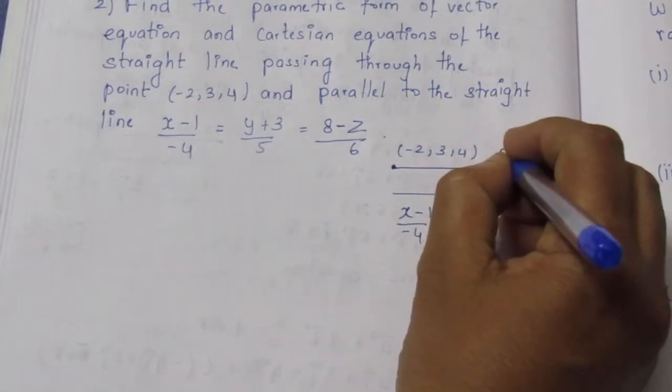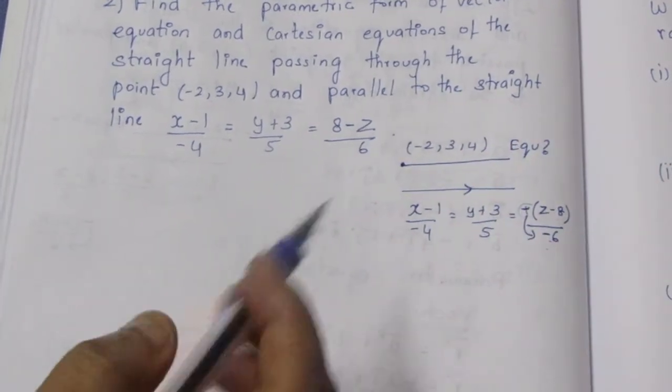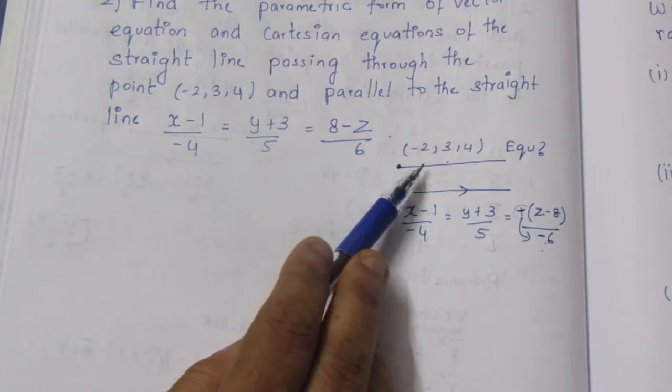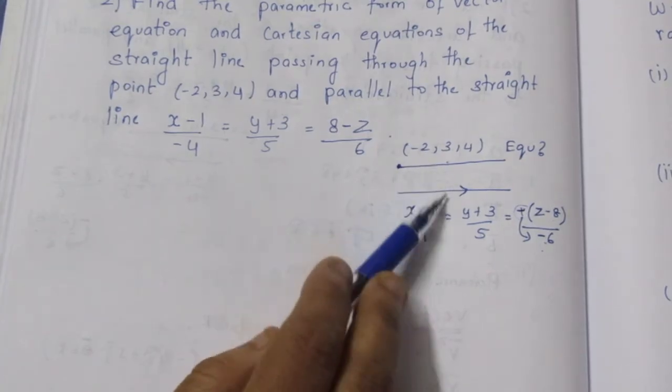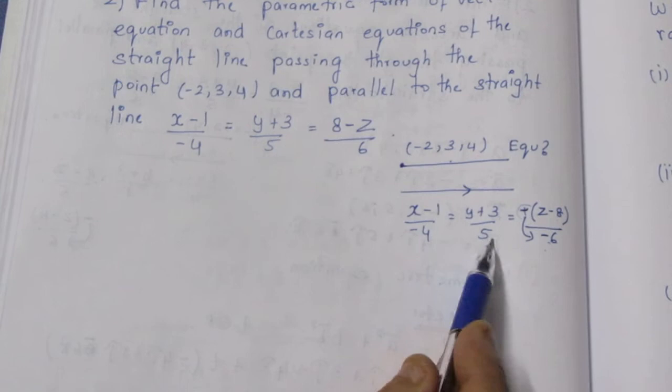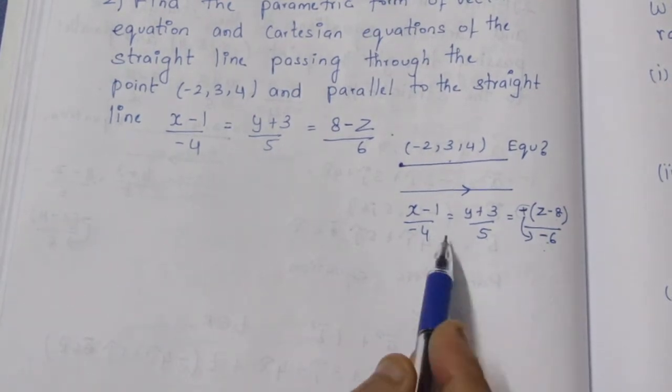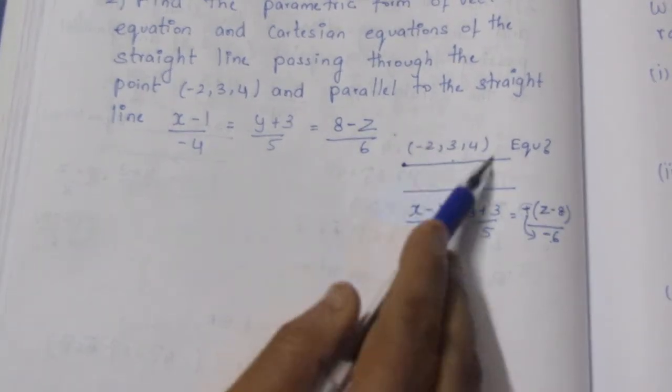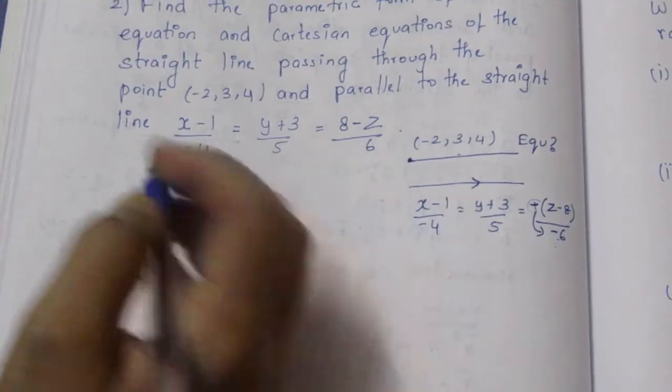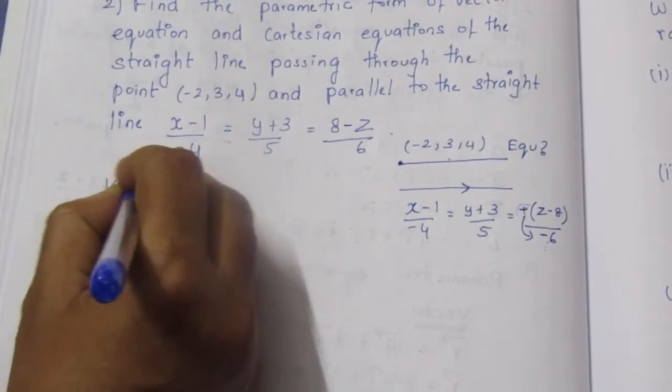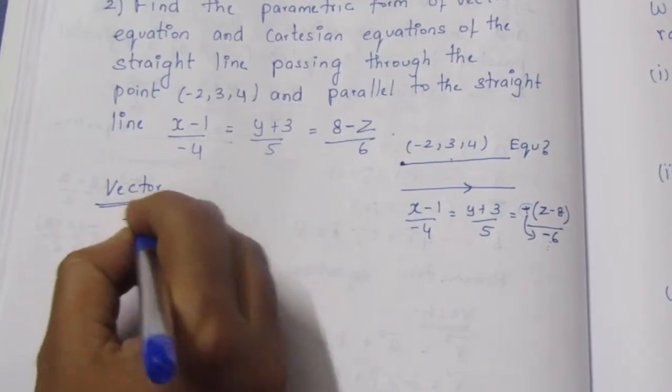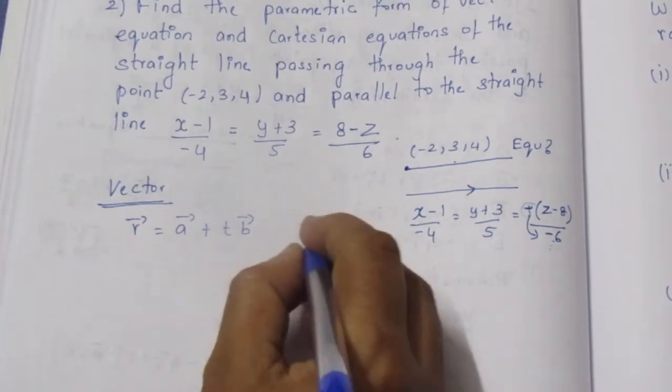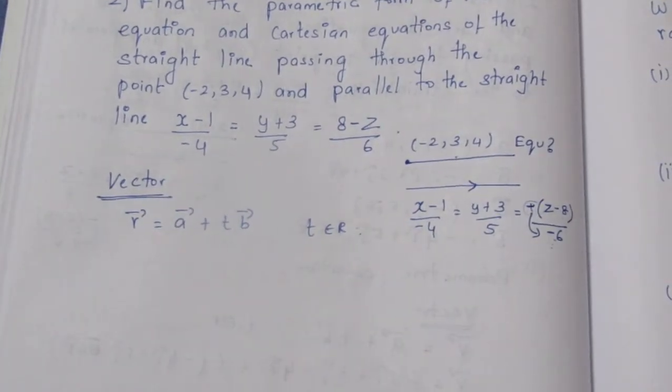Now for the vector equation. The vector form for a line through one point and parallel to a direction is: r vector equals a vector plus t times b vector, where t is a real number, any number multiply for value t.